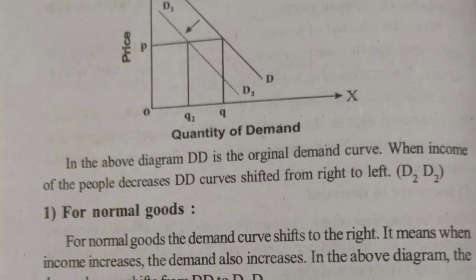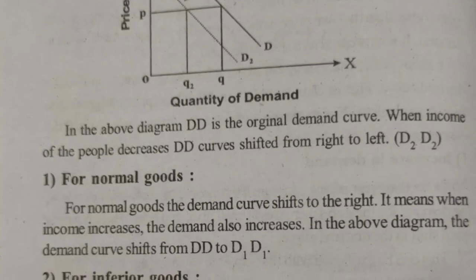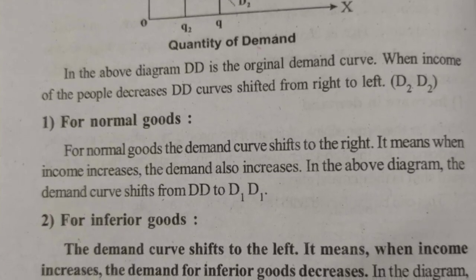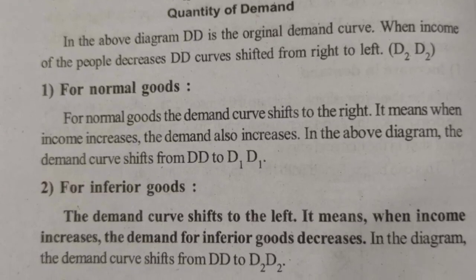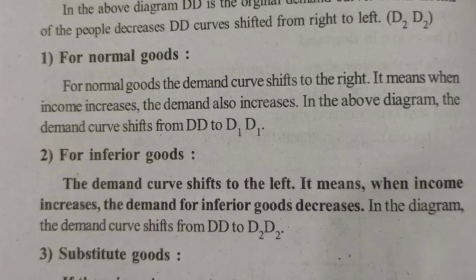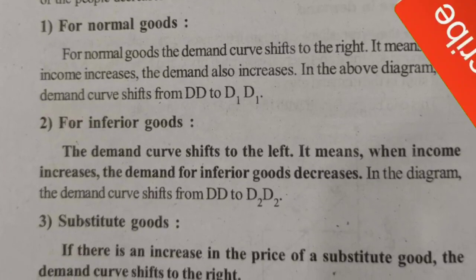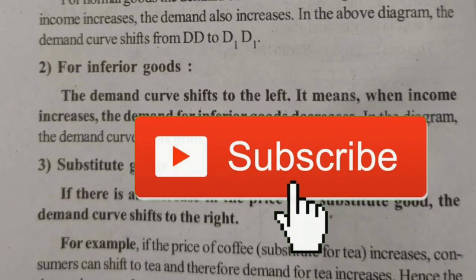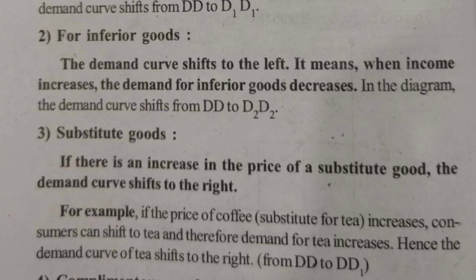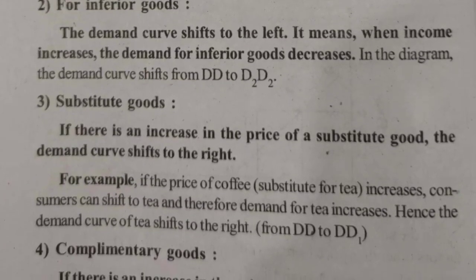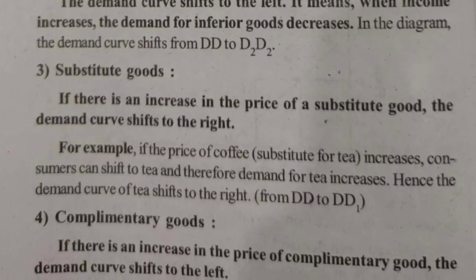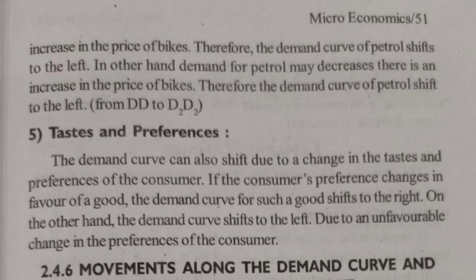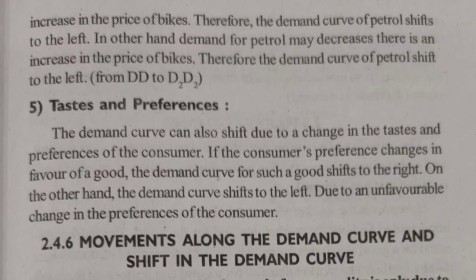There is a diagram for this showing quantity of demand. There are two types: increase in demand and decrease in demand. When demand increases, the curve shifts upward; when demand decreases, it shifts downward. The factors causing a shift include normal goods, inferior goods, substitute goods, complementary goods, and taste and preferences.